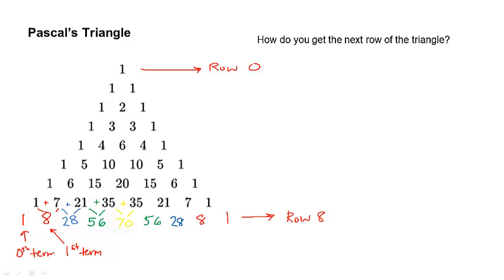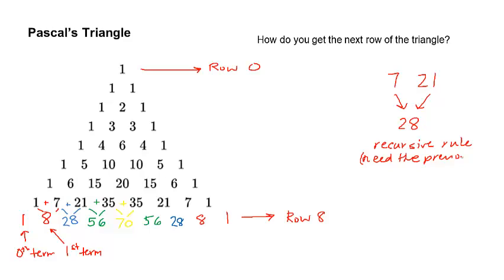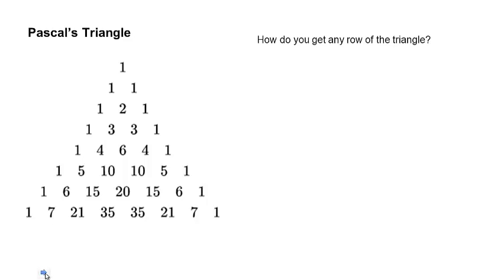This is all well and good if we want to sit here and map out the whole triangle. But if I wanted to get to, say, the 100th row of the triangle, that would be really annoying. What we are doing right here — the idea of adding the two terms above to get to the one below — is called a recursive rule. It means that we need the previous row to get the next row. Recursive rules are why this is annoying; we don't like to work with them. So let's think about a more important question: how do I get any row of this triangle? We will come back to this idea.